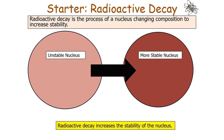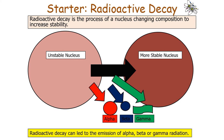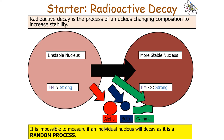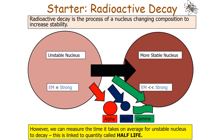Radioactive decay is the process of a nucleus changing in composition to increase stability, involving the emission of either alpha, beta, or gamma radiation. This instability is due to the comparative strength of the strong force — an unstable nucleus has electromagnetic and strong interactions of similar sizes, whilst a stable nucleus has the strong interaction much more dominant. It's impossible to predict if an individual nucleus will decay because it is random; however, we can measure the average time for an unstable nucleus to decay, which is linked to half-life.